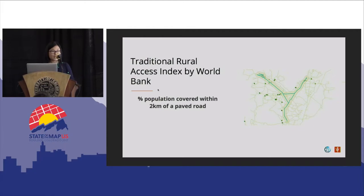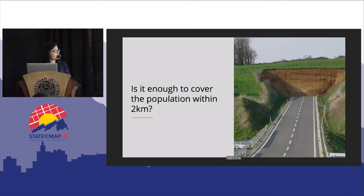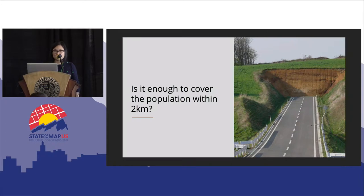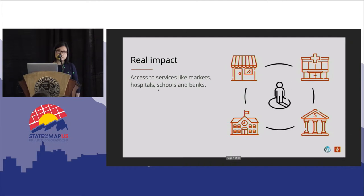However, this means that if a road like this has people covered by the two-kilometer buffer zone but is not actually connecting them to anywhere, it still counts. So we started thinking that real accessibility means supporting roads that can connect people to real needs — like hospitals, schools, banks, and markets.